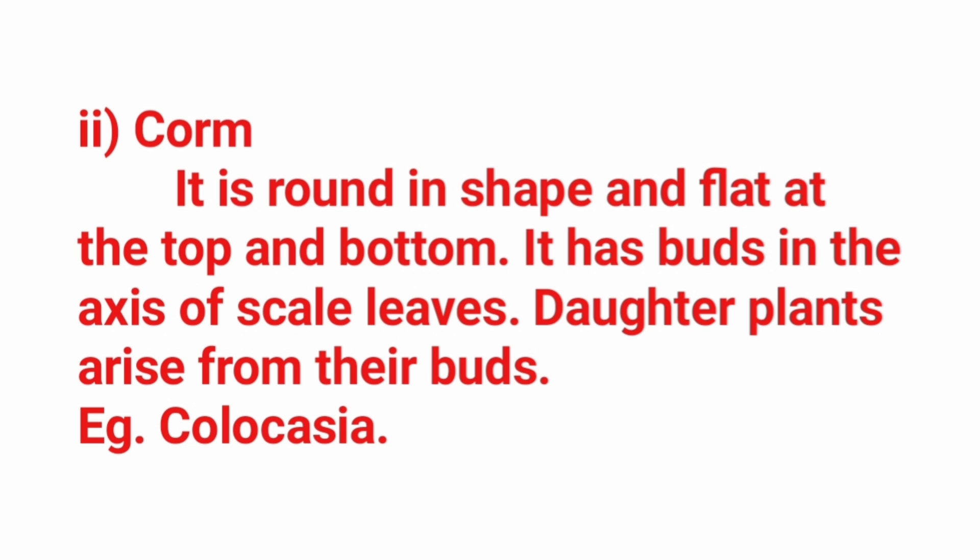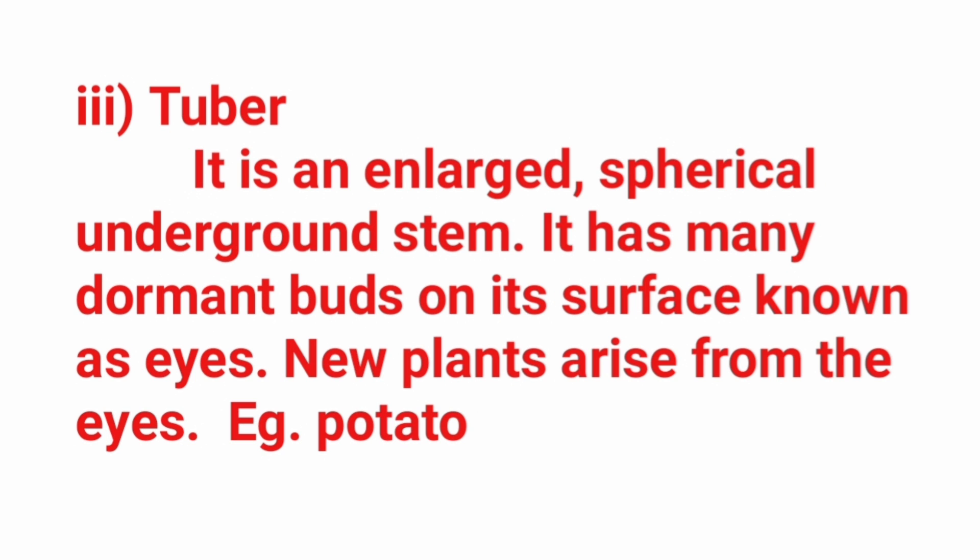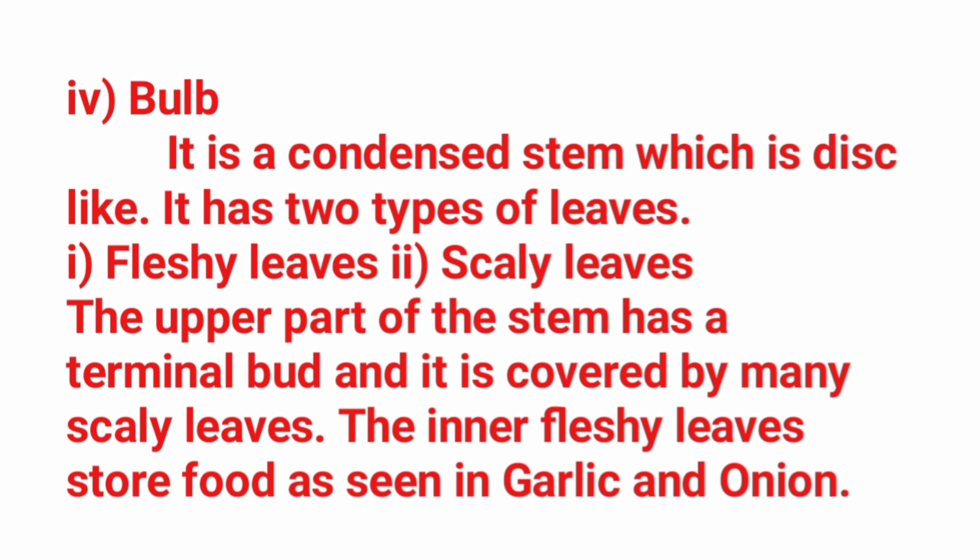2. Corm: it is round in shape and flat at the top and bottom. It has buds in the axils of scale leaves. Daughter plants arise from their buds. Example: Colocasia. 3. Tuber: it is an enlarged spherical underground stem. It has many dormant buds on its surface known as eyes. New plants arise from the eyes. 4. Bulb: it is a condensed disc-like stem with two types of leaves — fleshy leaves and scaly leaves. The upper part has a terminal bud covered by scaly leaves. The inner fleshy leaves store food, as seen in garlic and onion.